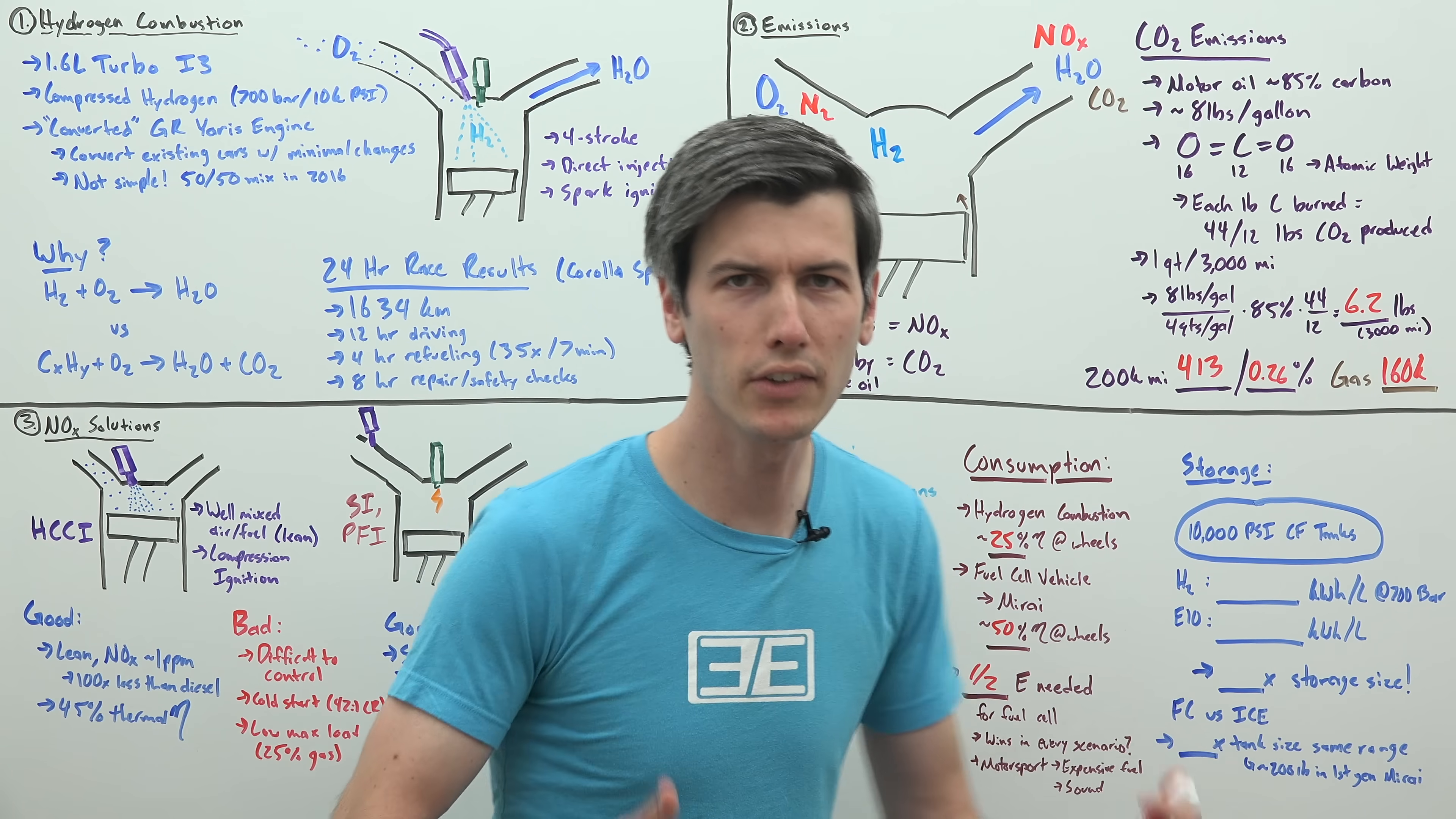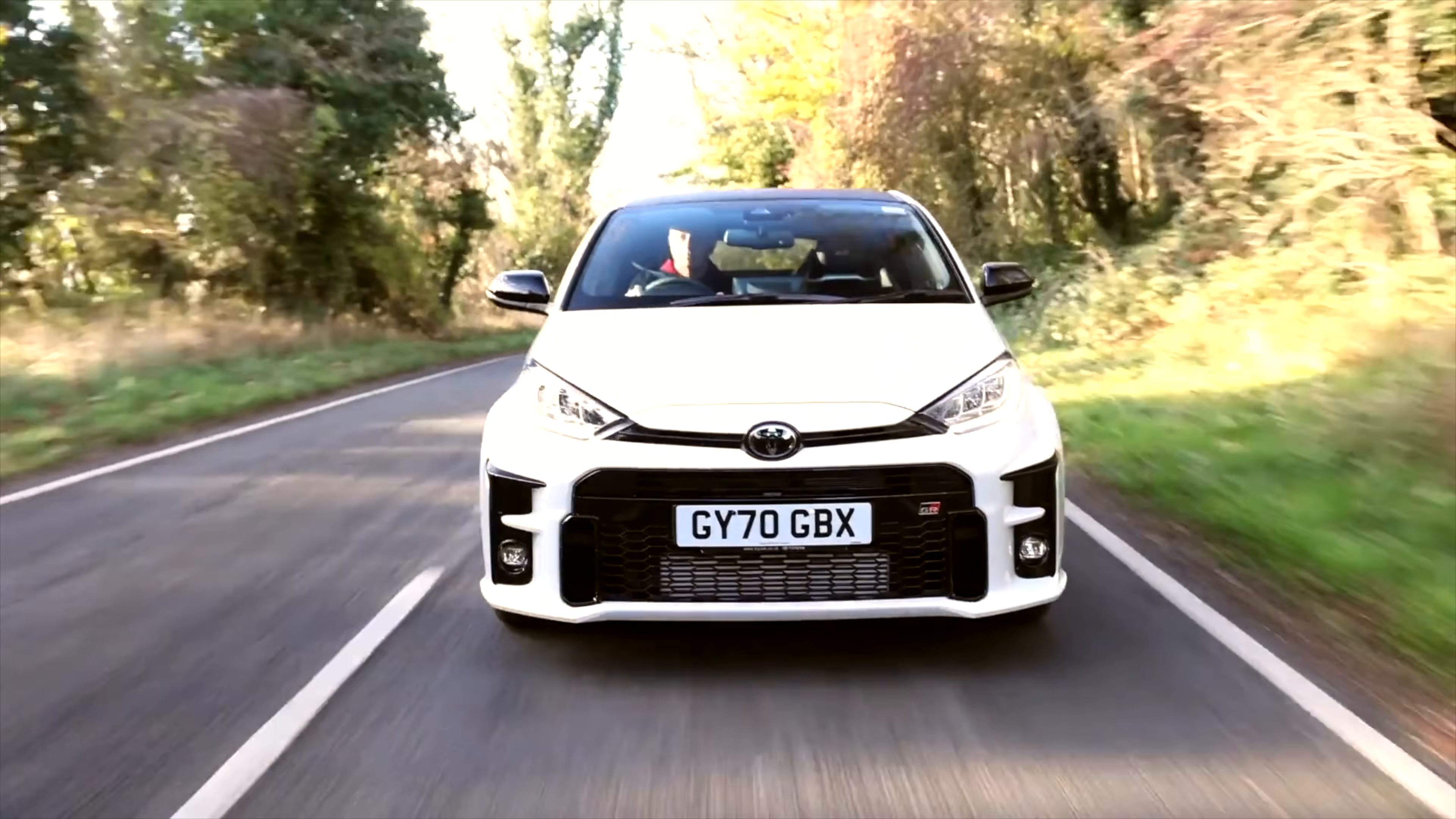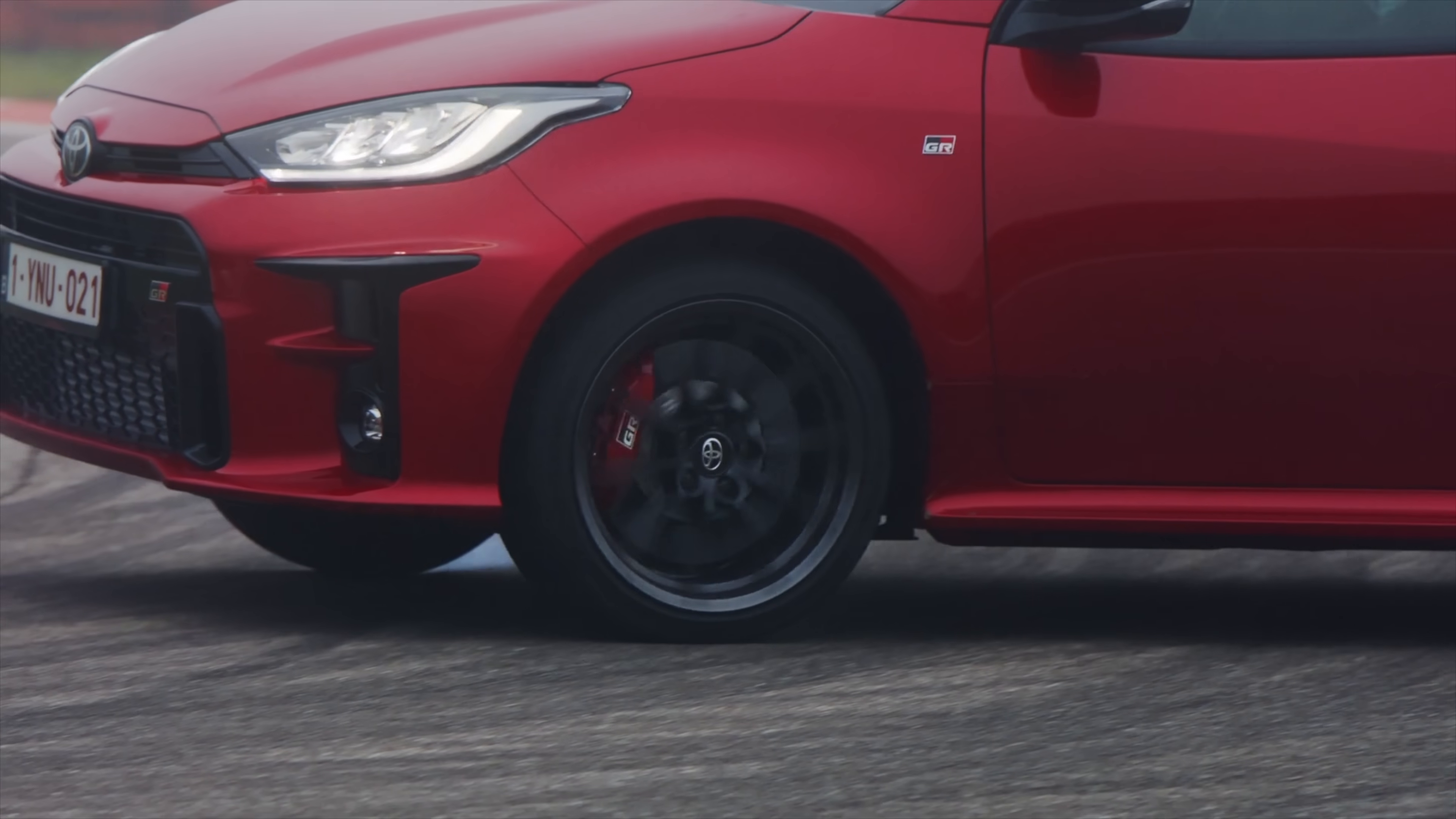If there were an easy way to convert existing engines, that would be great. But unfortunately, Toyota found out that it is not simple at all in trying to convert their 1.6 liter GR Yaris engine for this Corolla to hydrogen. They had quite a bit of reliability problems. It's kind of a new engine at the end of the day. It's not something that just existed off the shelf. So it's very difficult to do that conversion.